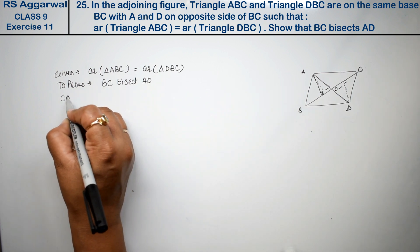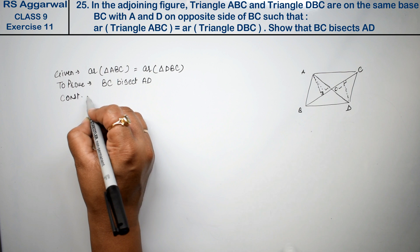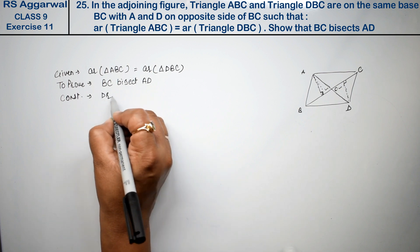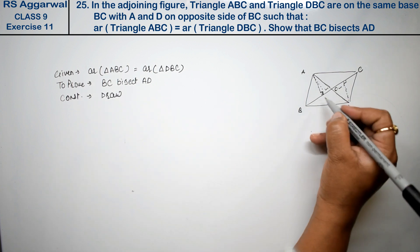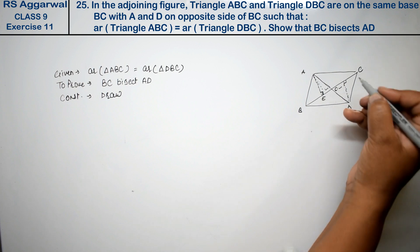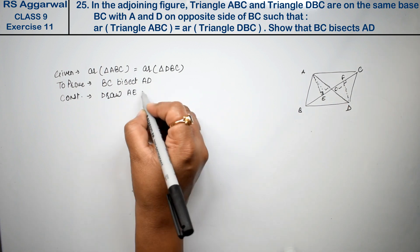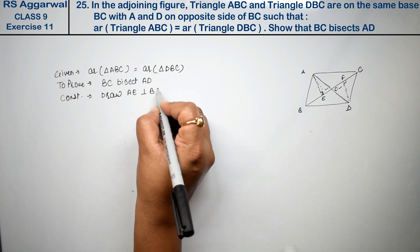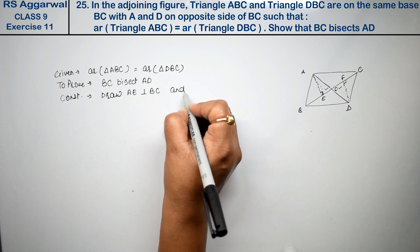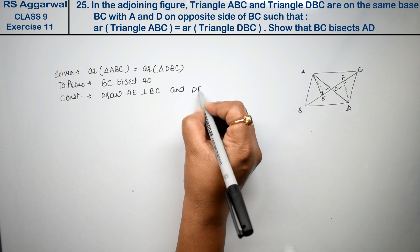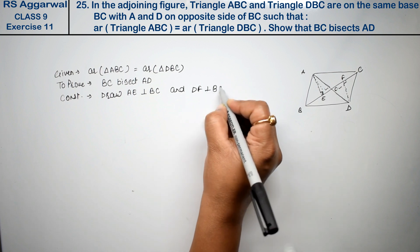Draw AE and DF. AE perpendicular to BC and DF perpendicular to BC.